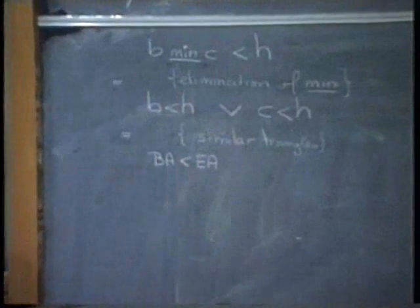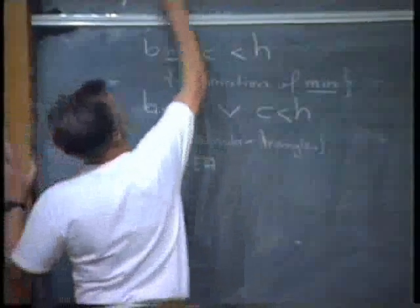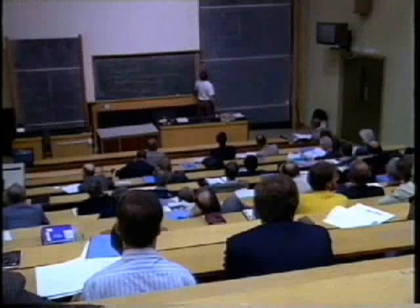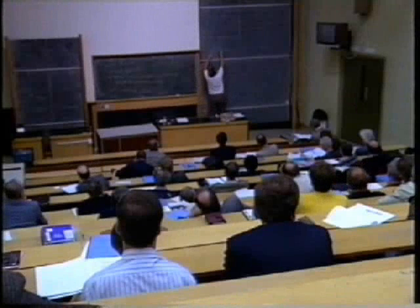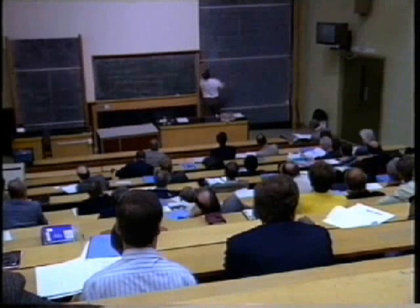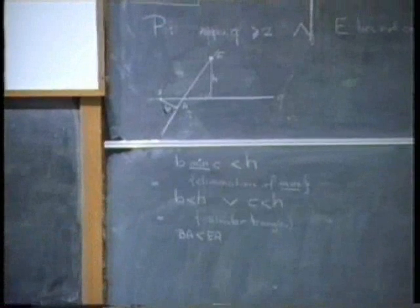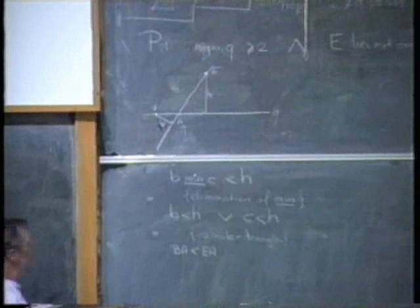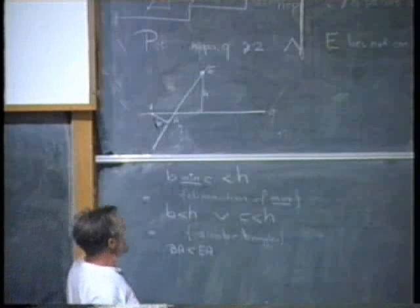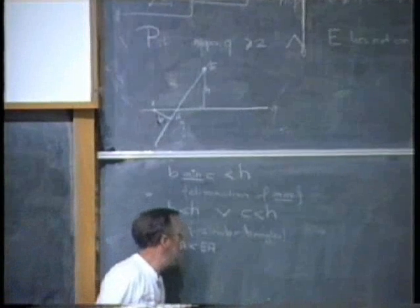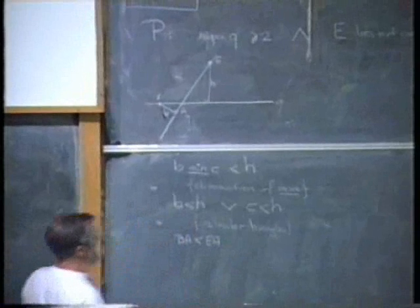These two triangles are similar because they both have that right angle there and they share that one. So these two sides, the ratio of them is the same as the ratio of the hypotenuses. So BA less than EA is the one.